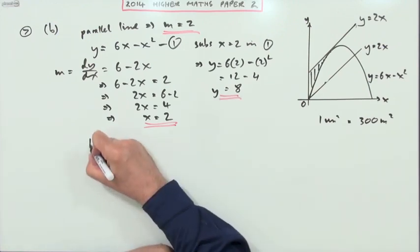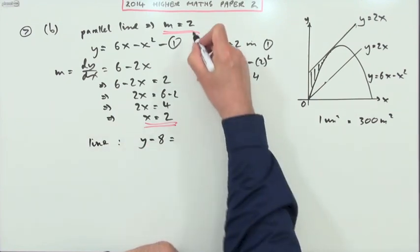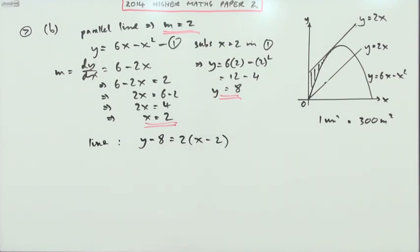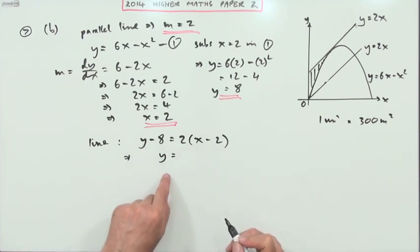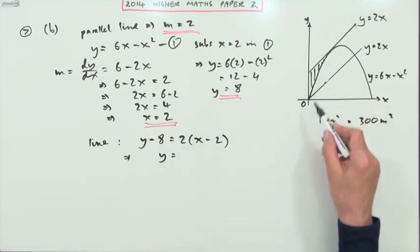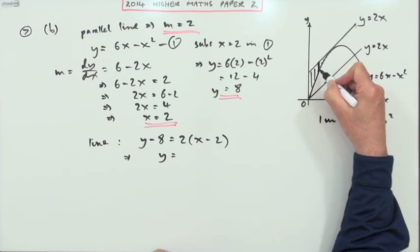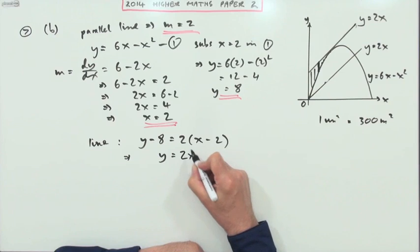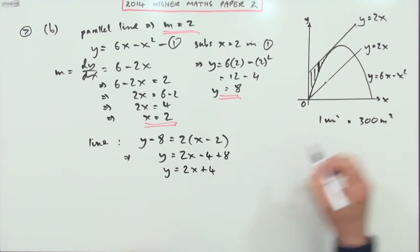So now I can say the equation of that line is y minus 8 equals the gradient, which is 2, times (x minus 2). So y equals, and I want it in the form of y equals because when you work out an area, it's the area of these little thin strips, and the heights of them are given by the y coordinate of the top minus the y coordinate of the bottom. y equals 2x minus 4 plus 8, y equals 2x plus 4. So that was the equation of the top line, y equals 2x plus 4.